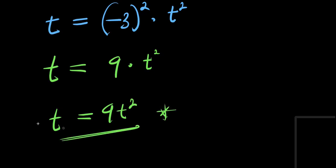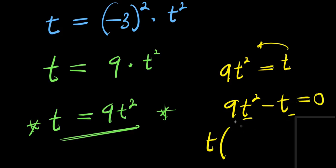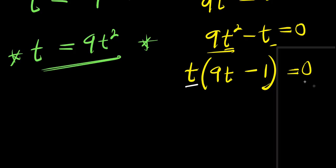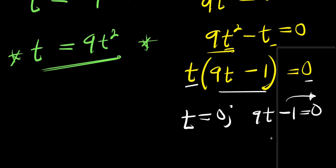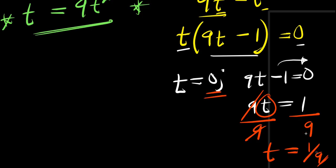We can decide to solve this in two ways. The first way is to form an equation: 9t squared equals t. After rearranging, I have 9t squared minus t equals 0. I factor out t because it is common: t times (9t minus 1) equals 0. So t equals 0, or 9t minus 1 equals 0, which gives 9t equals 1, and dividing by 9, we get t equals 1 over 9.